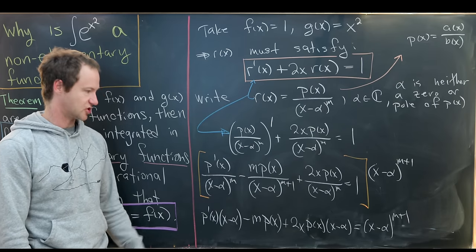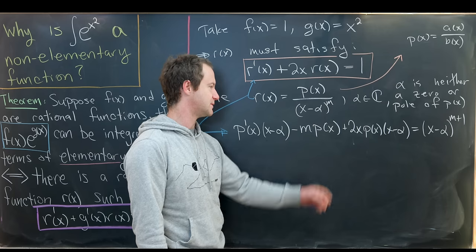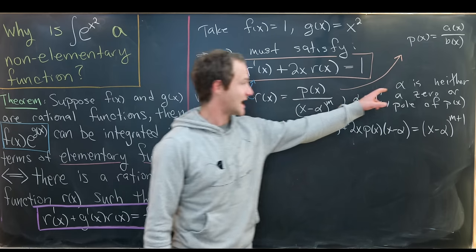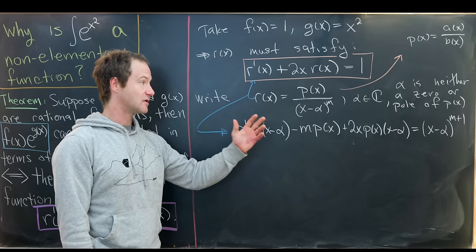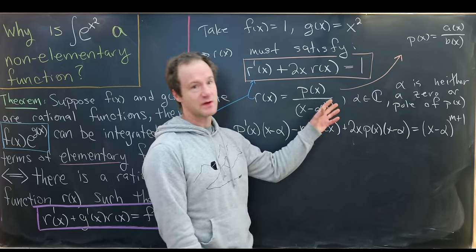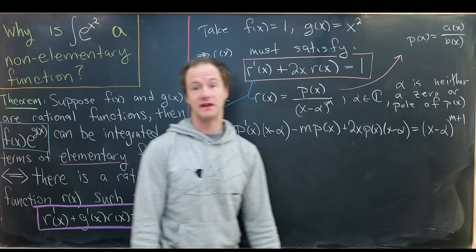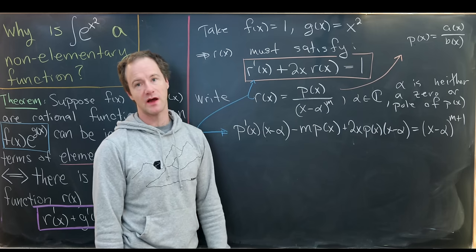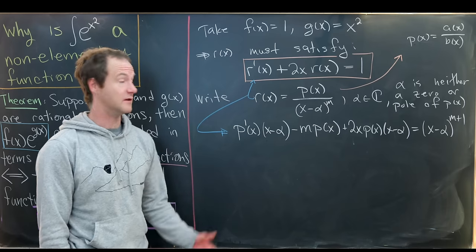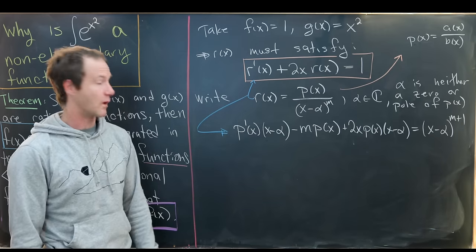On the previous board we arrived at: p prime(x)·(x−α) minus m·p(x) plus 2x·p(x)·(x−α) equals (x−α)^(m+1). Recall that alpha is neither a zero nor a pole of p(x), so we can evaluate at alpha without getting zero or infinity. Also, if alpha is not a pole of p(x), it is not a pole of p prime(x) either — which follows from differentiating and seeing the denominator becomes b(x) squared.